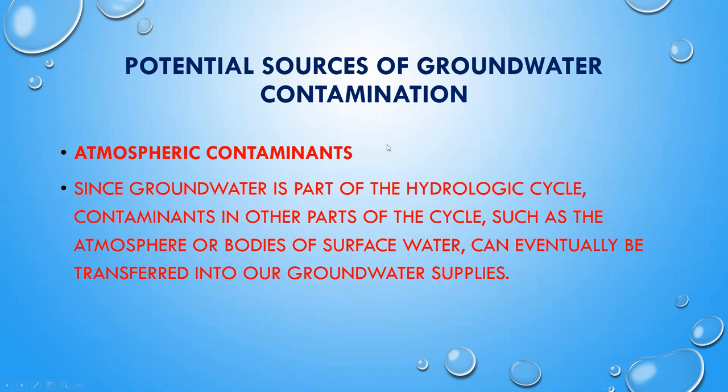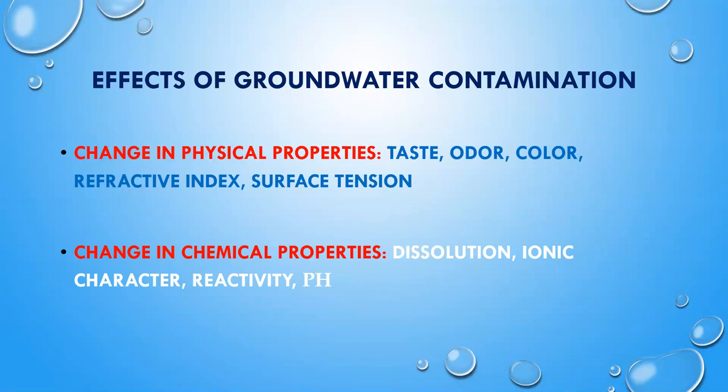This contamination results in changes in the properties of water. The chemical reactivity of water changes with changes in pH. When acid rain occurs, the raindrops are corrosive to metals and whatever substances they contact, and acid rain is also a major cause of loss of precipitation. Changes in physical properties like taste, odor, color, refractive index, and surface tension are also responsible for limiting the utility of this natural commodity.